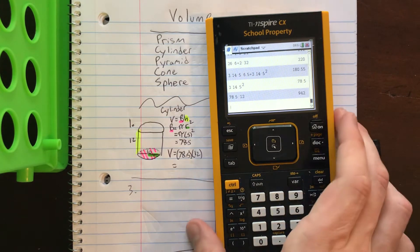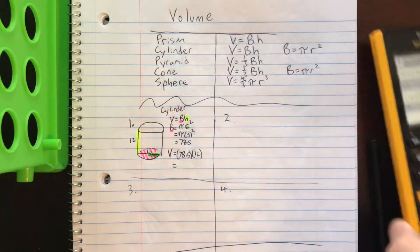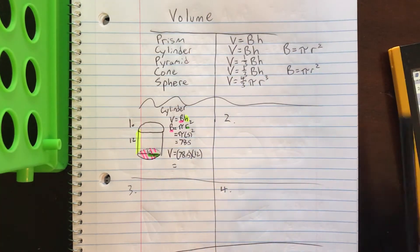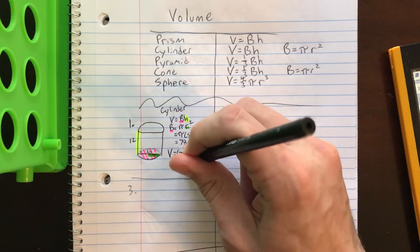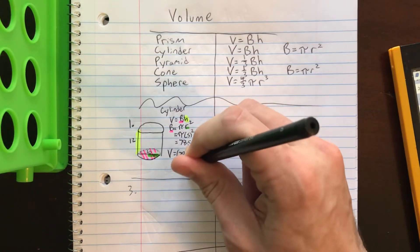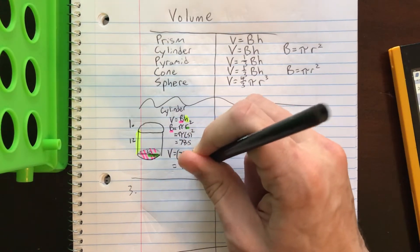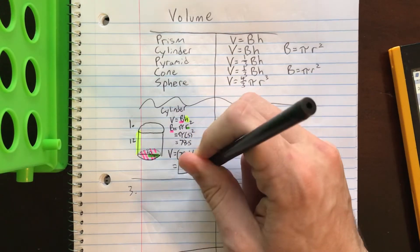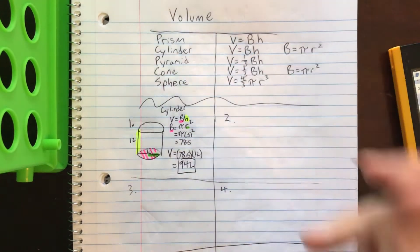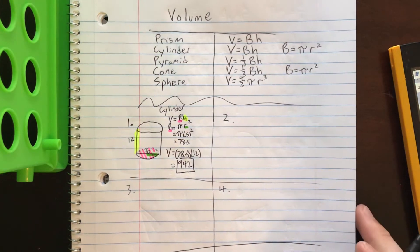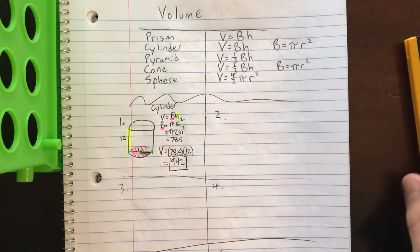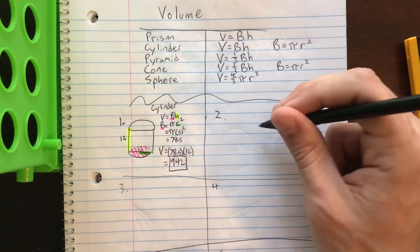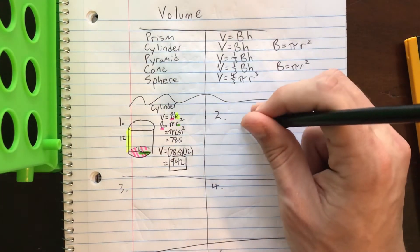Back to the volume formula, we'll do 78.5 times 12, which is 942. So the volume of the cylinder is 942 cubic units. Cylinder — not too bad.